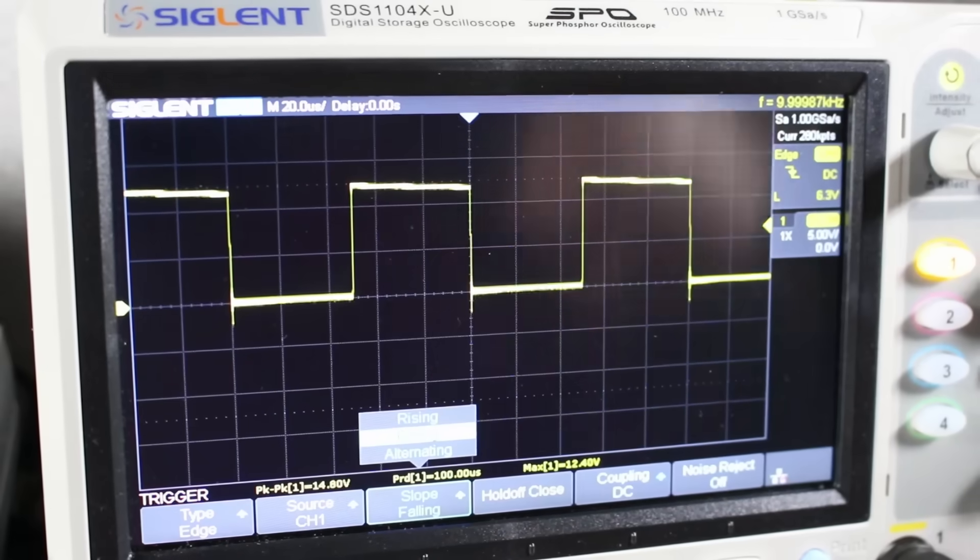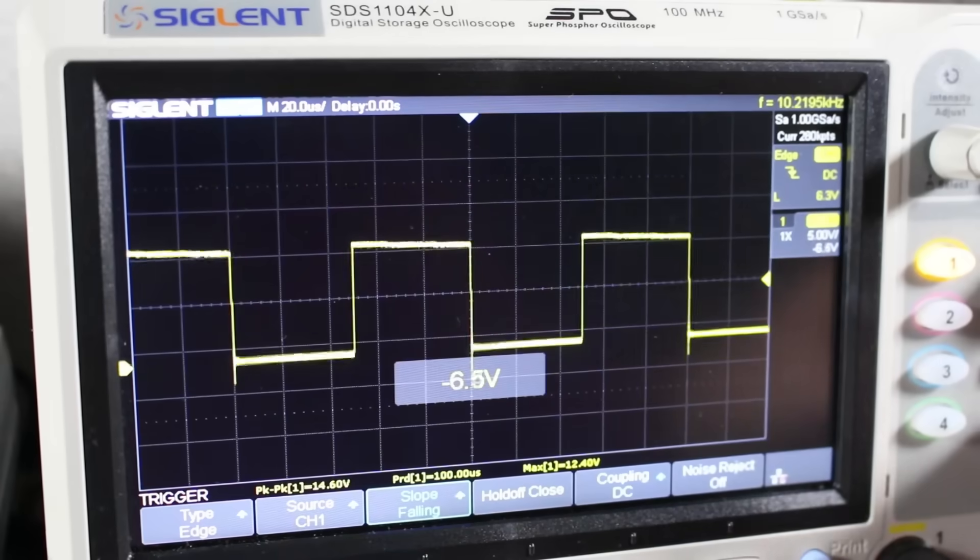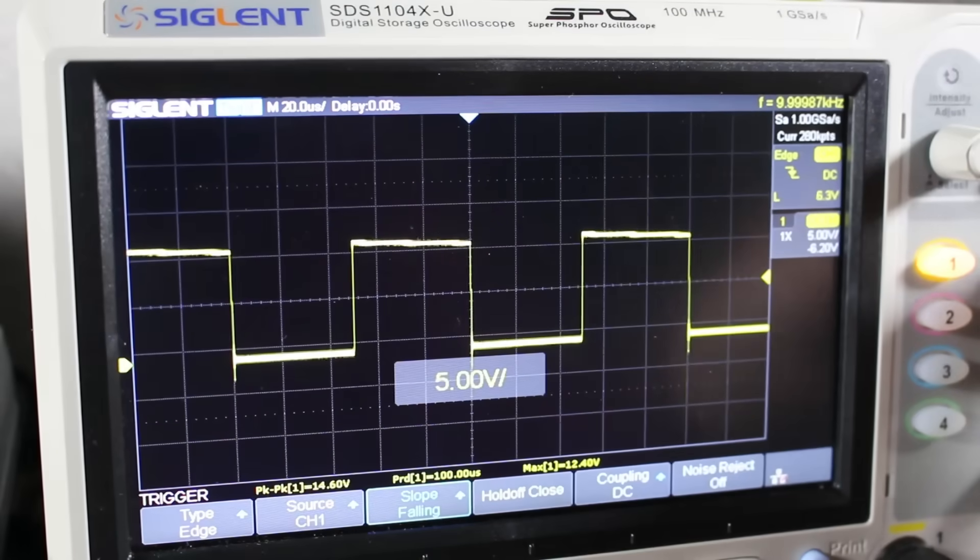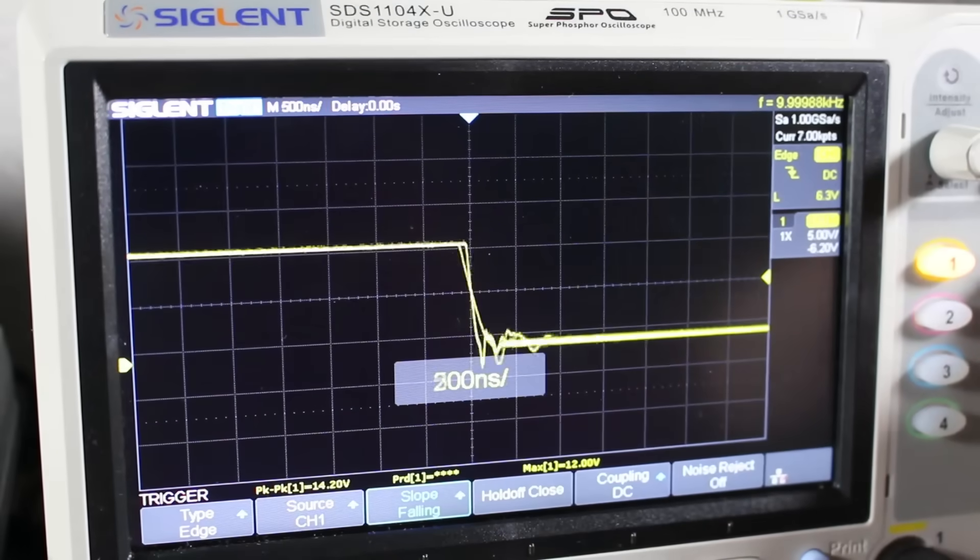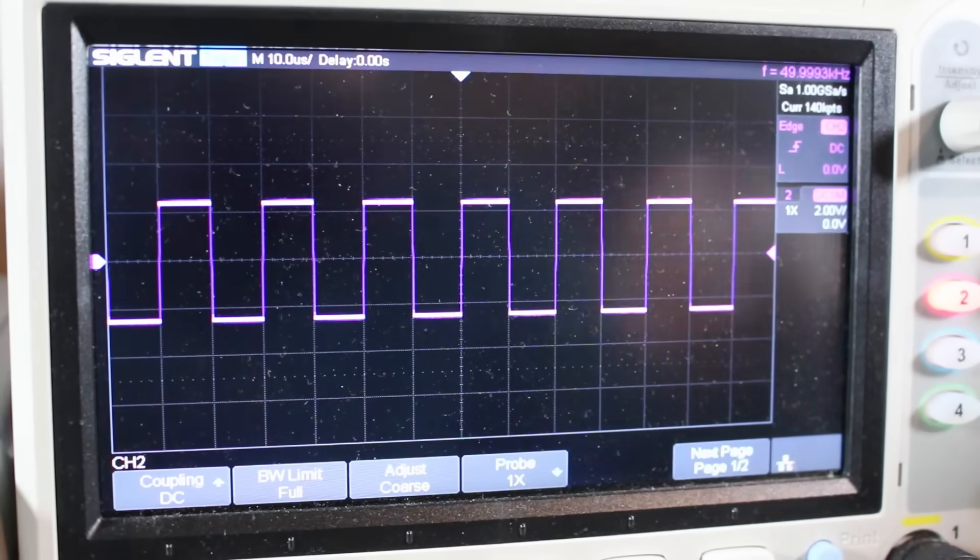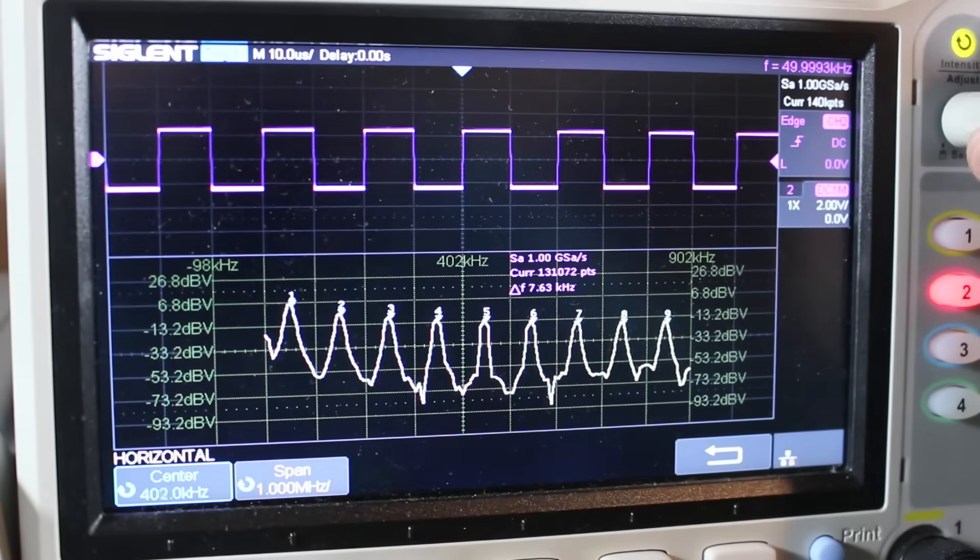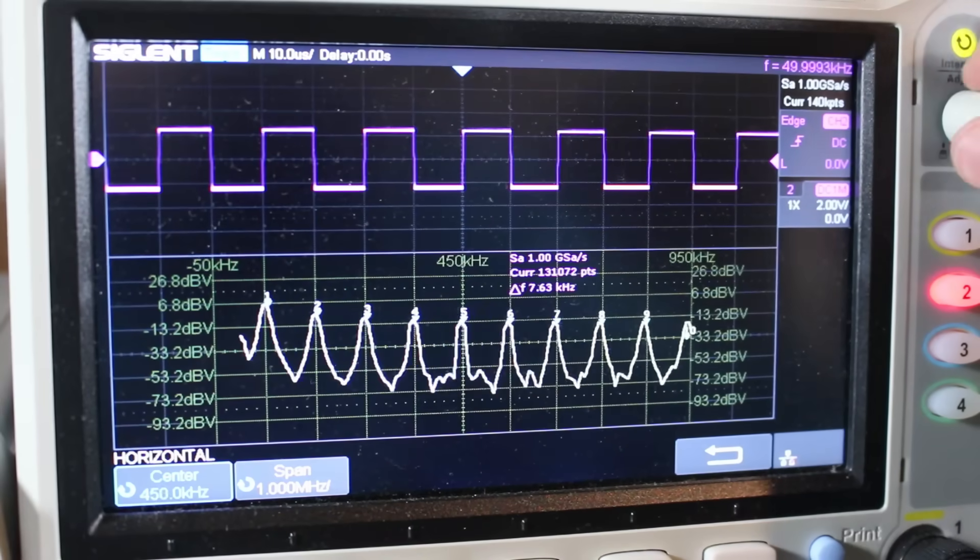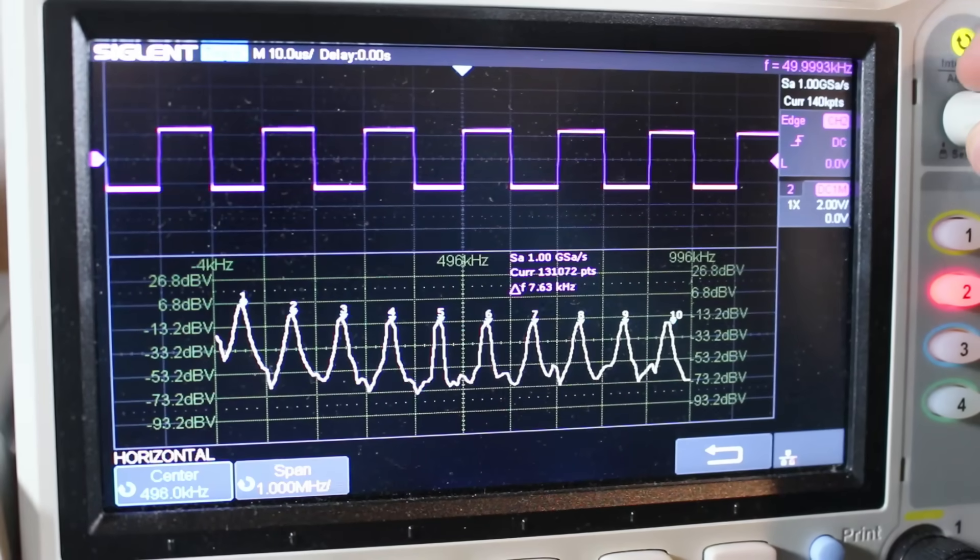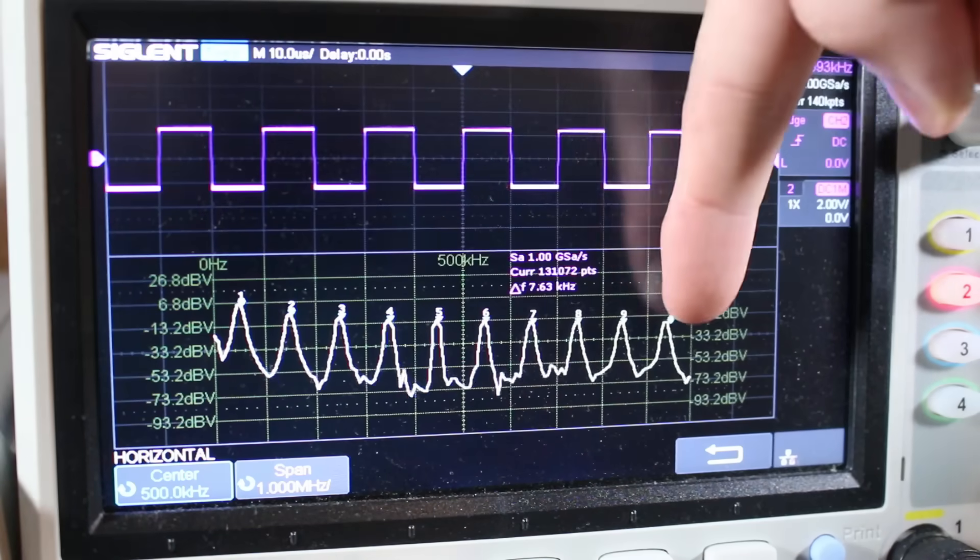Like I said in the intro, sine waves aren't the easiest to generate, but square waves are. Something as simple as an astable 555 timer circuit could do the trick. Let's take a look at the frequency makeup of a 50 kHz square wave. To do this, we can pull up the FFT on an oscilloscope. As you can see, the first we can see is at 50 kHz, which is the fundamental frequency. Afterwards, you'll see several harmonics which diminish in amplitude as they go on.